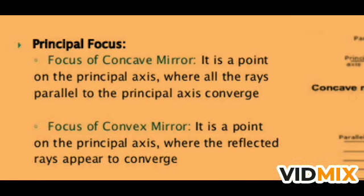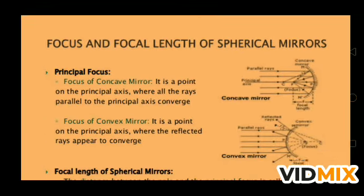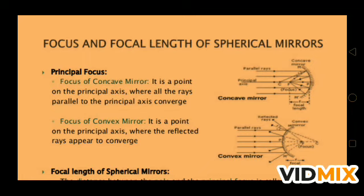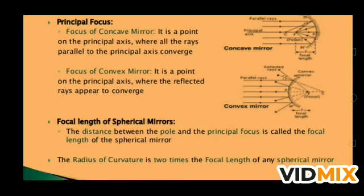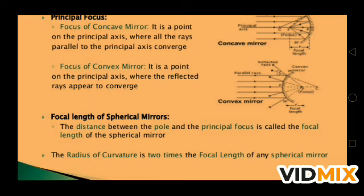The definition of principal focus: for a concave mirror, it is the point on the principal axis where all rays parallel to the principal axis converge — converge means to meet at a point. For a convex mirror, it is the point on the principal axis where the reflected rays appear to converge — meaning the reflected rays are extended backward to meet at the point, giving a virtual focus.